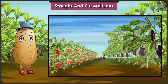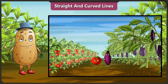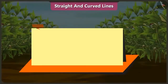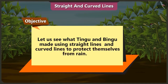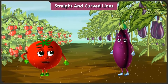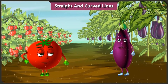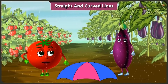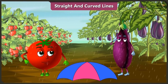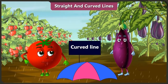Friends, Tingu and Bingu have gone for a walk without taking the umbrella. Suddenly it starts raining. Let's look at what Tingu and Bingu made using straight and curved lines to protect themselves from rain. Oh Bingu, before it starts raining heavily, please find a plan to protect ourselves from the rain. Yes, I will make an umbrella very quickly. Look, the umbrella is made using these curved lines. Oh, but how will we hold the umbrella?